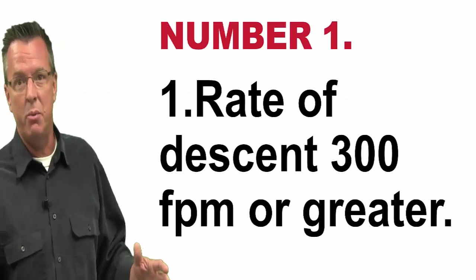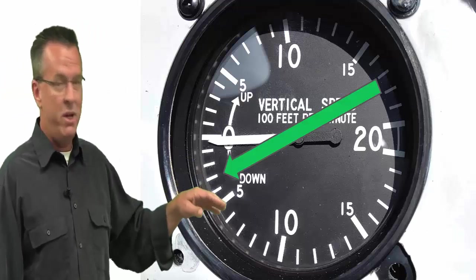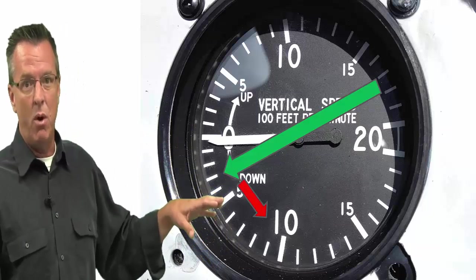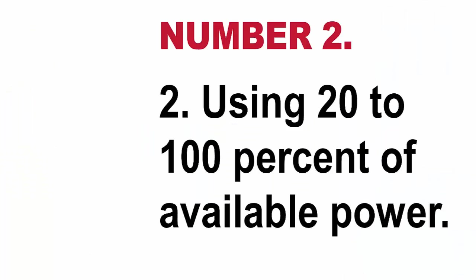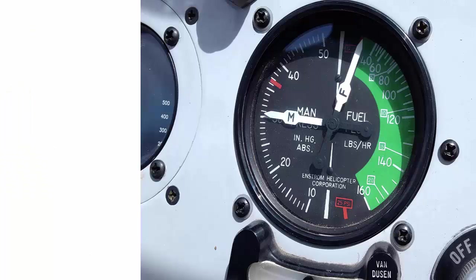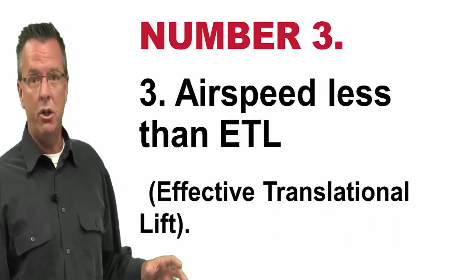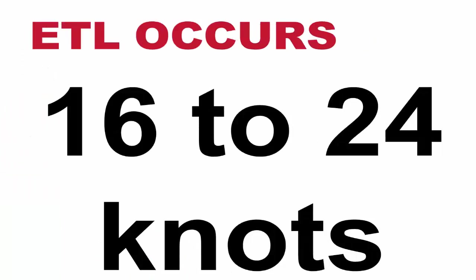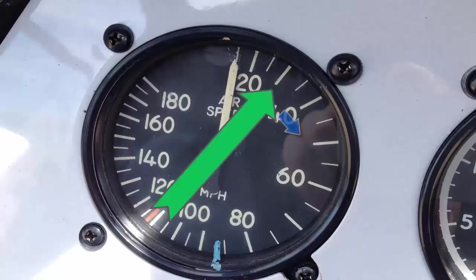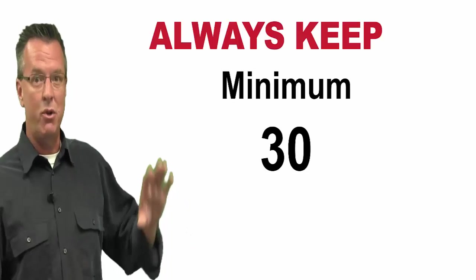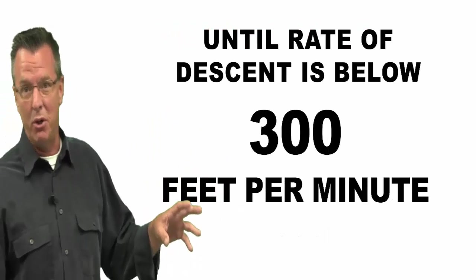Let's break these three down. Rate of descent 300 feet per minute or greater — if you are at 300 or higher on your VSI as you're flying your approach, that's number one. Using 20 to 100 percent of available power — you are using power, you're not in autorotation. Airspeed less than ETL — effective transitional lift occurs somewhere between 16 to 24 knots, so if you're at 30 or above you're not in that zone. There's a little fudge factor figured in, but that's to keep you safe. Remember: always keep 30 knots on your airspeed until your rate of descent is below 300 feet per minute and you will not get into settling with power.